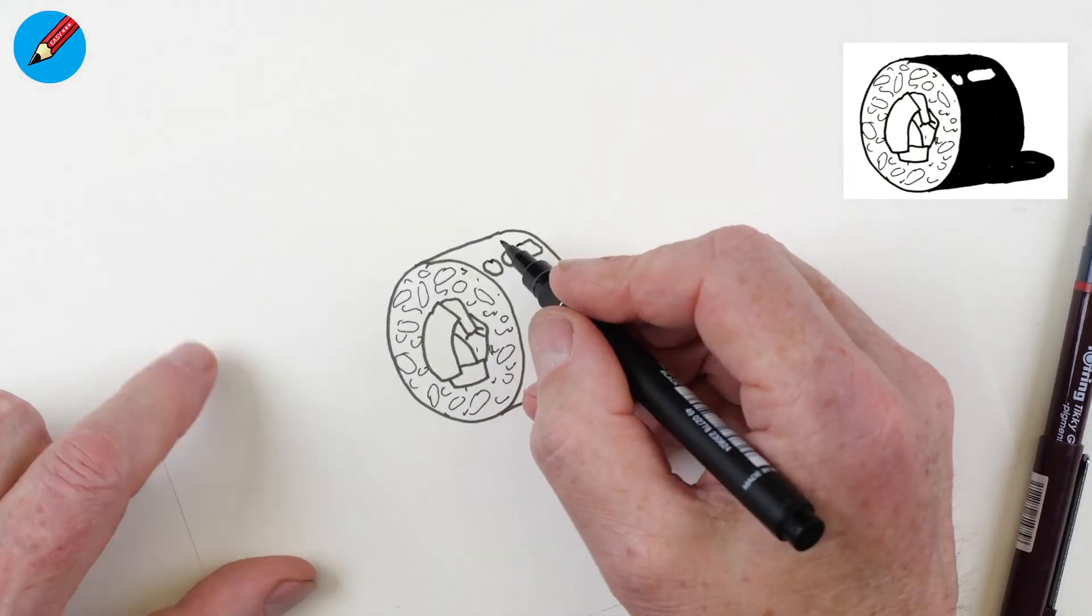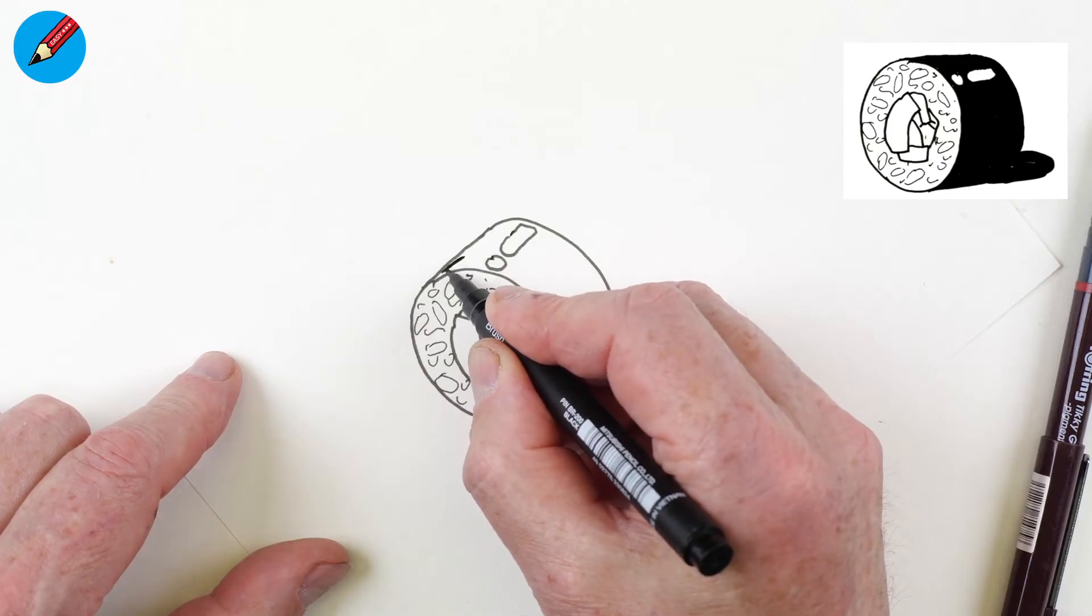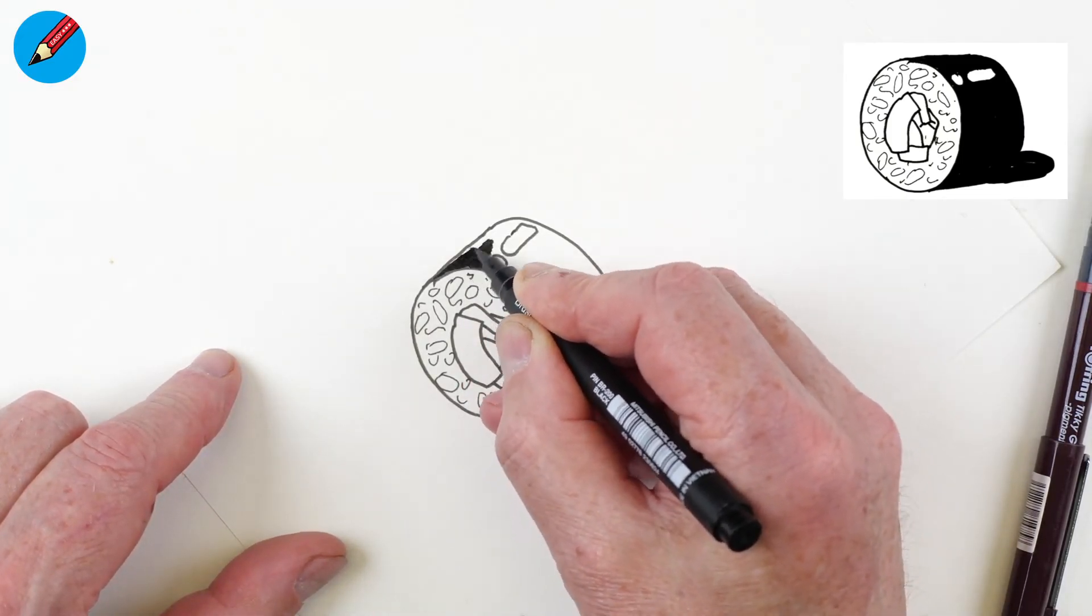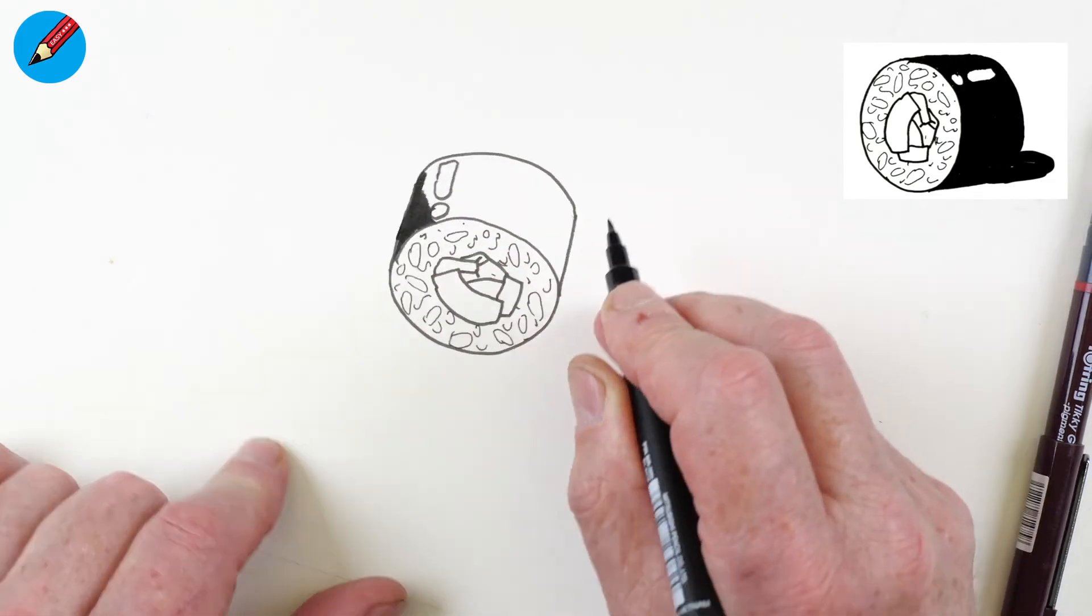And then we need to shade it all in. I'm going to speed this up a little bit by using a brush pen, which makes it easier.